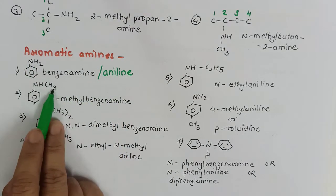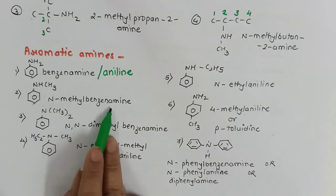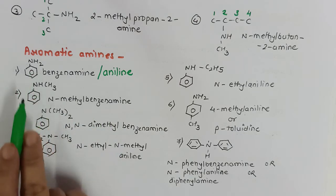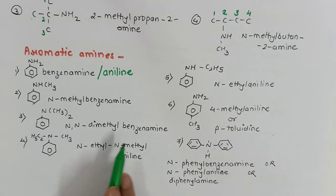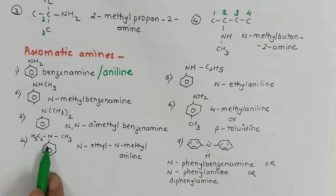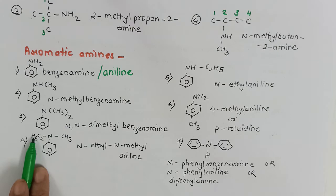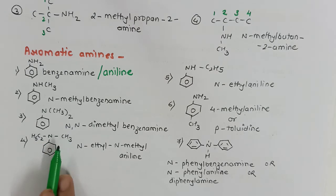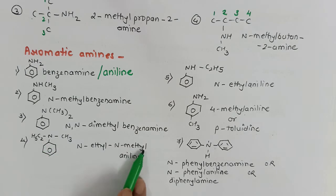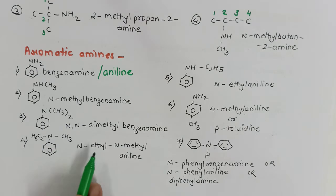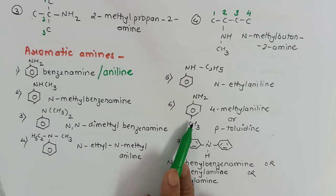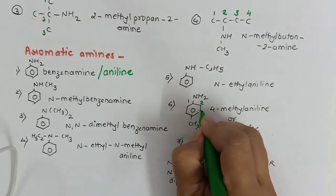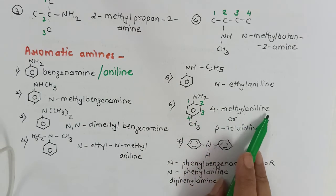From aniline, if one hydrogen is replaced by one methyl group, it becomes N-methylbenzenamine or N-methylaniline. If both hydrogens on nitrogen are replaced by methyl, it is N,N-dimethylbenzenamine or N,N-dimethylaniline. If two different alkyl groups are present on nitrogen in aniline, they are arranged alphabetically — for example, N-ethyl-N-methylaniline. When a substituent is present on the benzene ring, numbering gives 4-methylaniline.